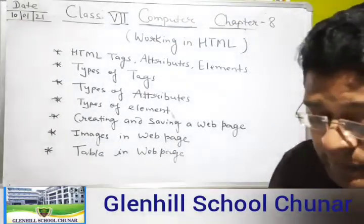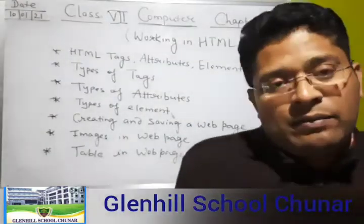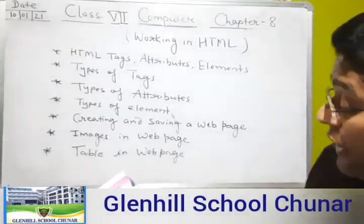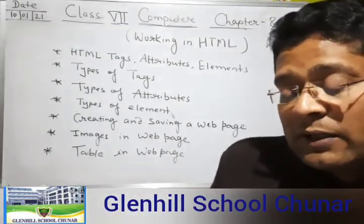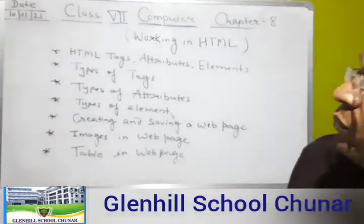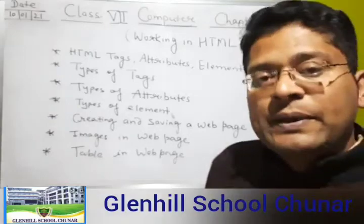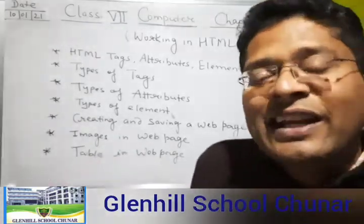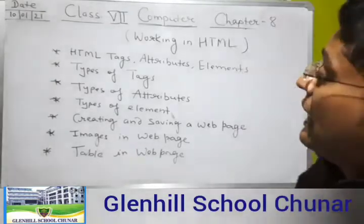So our first point is HTML tags and attributes. HTML is made up of elements, tags, and attributes that work together to identify document parts and instruct the browser on how to display them. In this chapter — Chapter 8, Working in HTML — we look at what a tag is and how many types of tags, attributes, and elements there are.